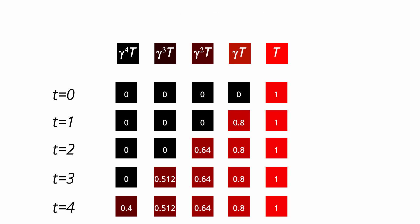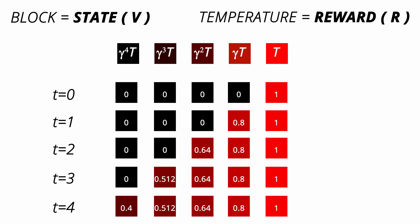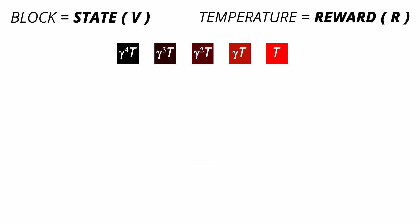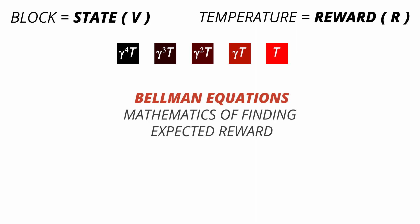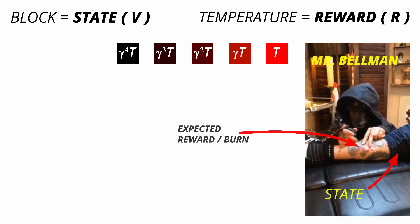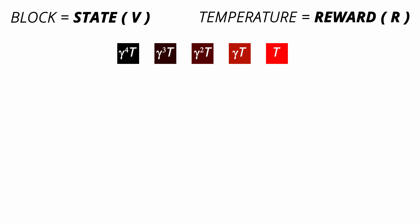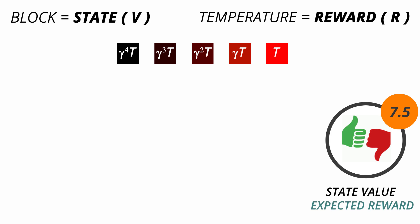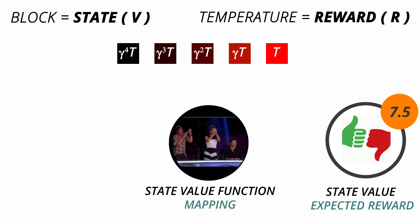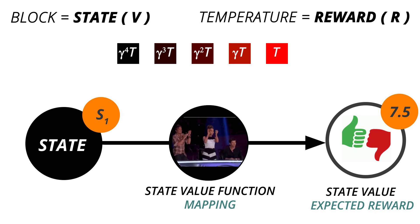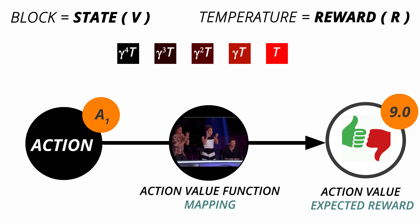If you haven't figured it out, the blocks here are the states and the temperature is the reward. If you put the stuff in mathematical terms, then we can call it Bellman equations. You can look up the mathematics in the blog that I mentioned in the description. But in essence, it is just using the discounting mechanism to output the numbers of each state and action. You can think of this number as temperature or expected reward. This number is called state value V and action value Q. The function which emits these taking state as input is called state value function, and for action it is called action value function.